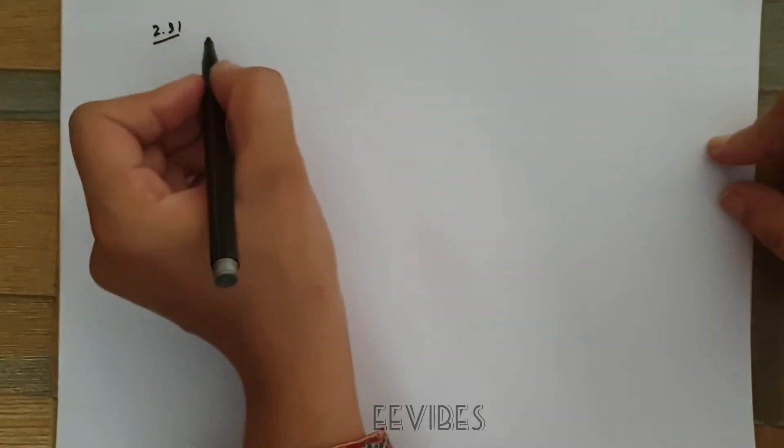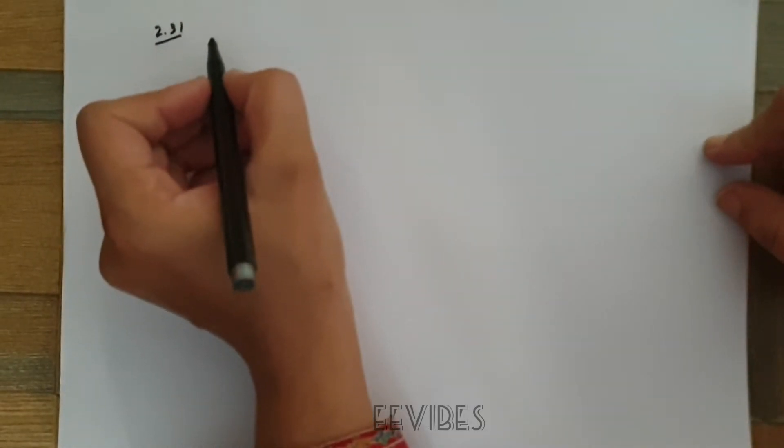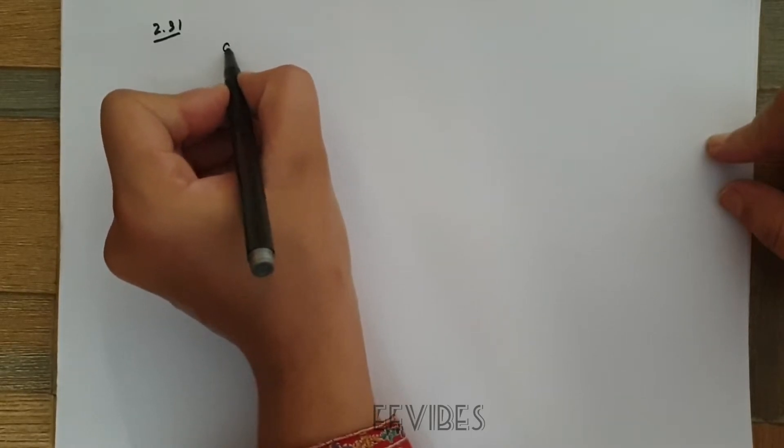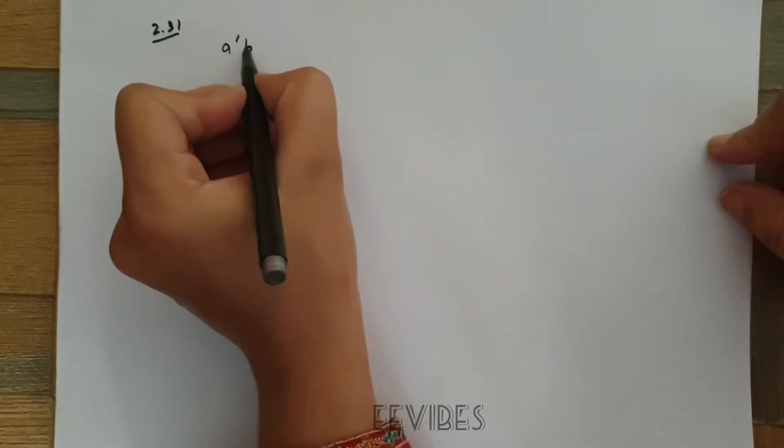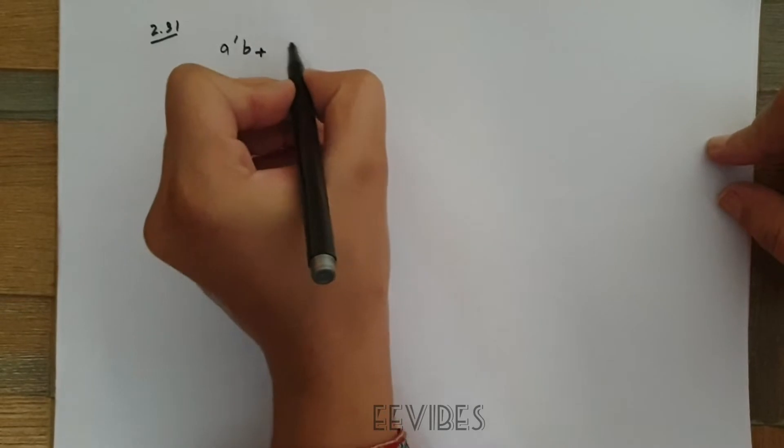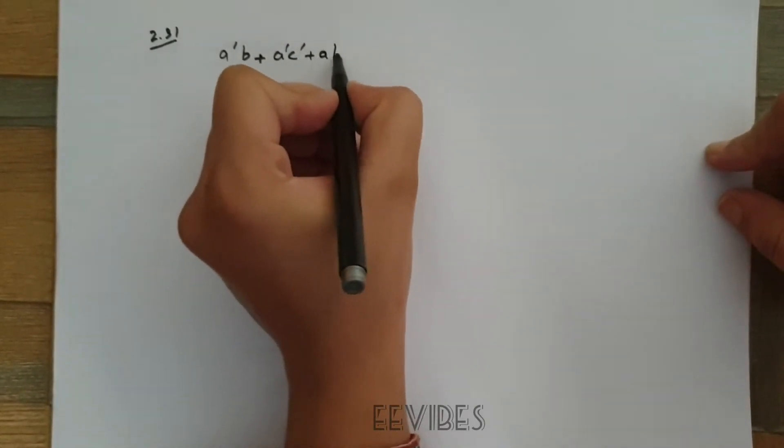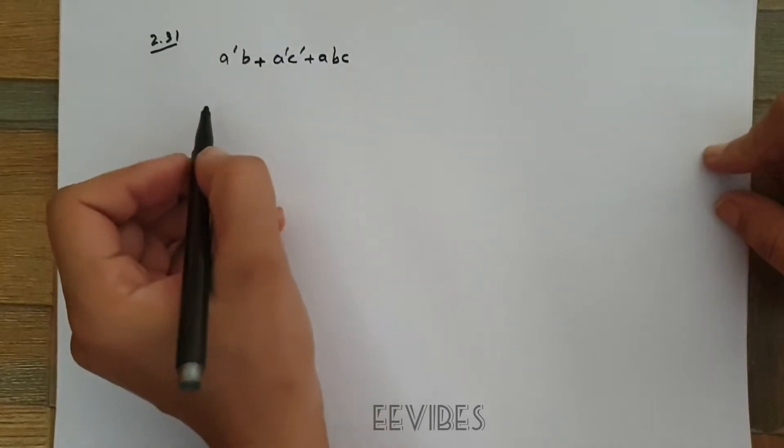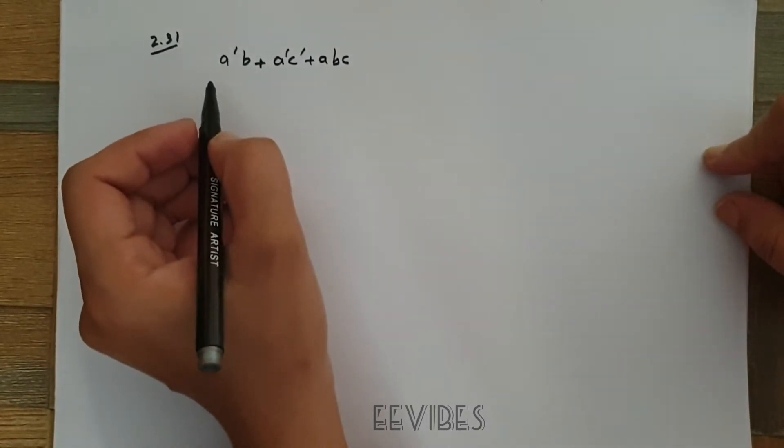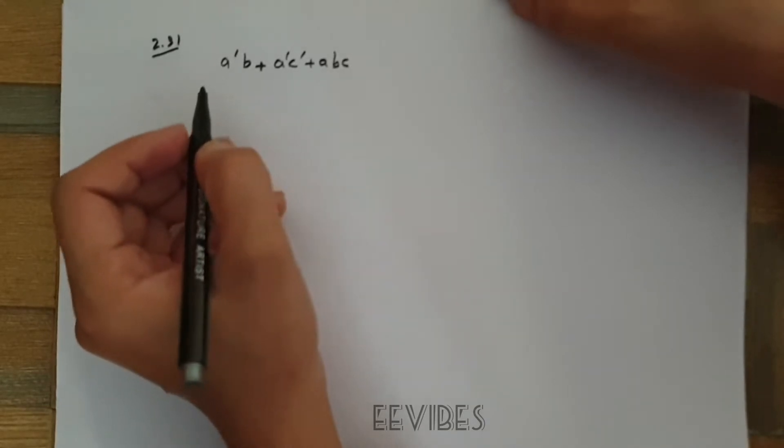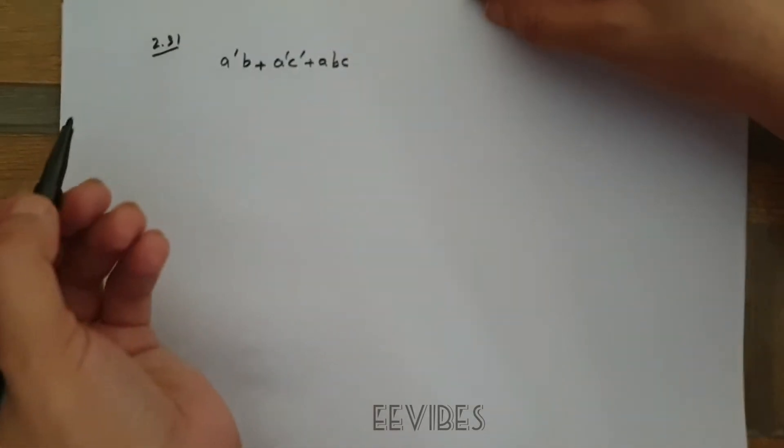I'll let you know both procedures for representing the given boolean function that is a complement b plus a complement c complement plus abc as the sum of the products or the product of the sums. So I will do both procedures so that you can get the idea.